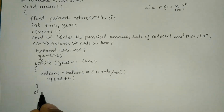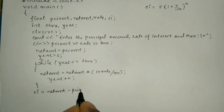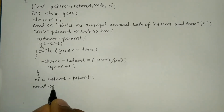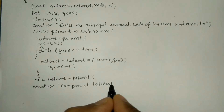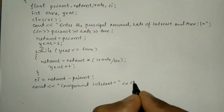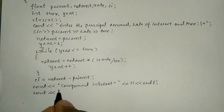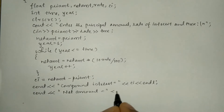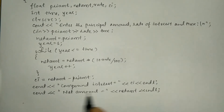After the loop, compound interest is calculated as: CI = net_amount - pri_amt, followed by a semicolon. Then we display the result using cout: printing 'Compound Interest = ' followed by the value of CI and endl, and then 'Net Amount = ' followed by the value of net_amount and endl with a semicolon.